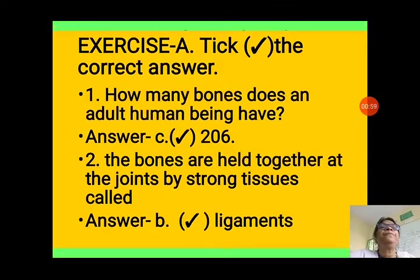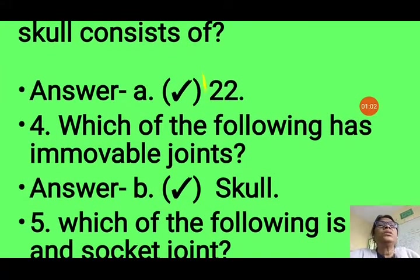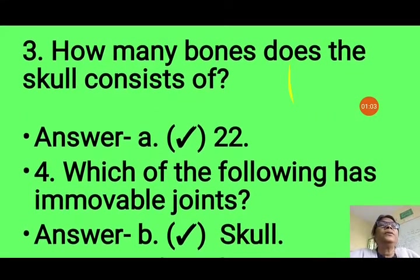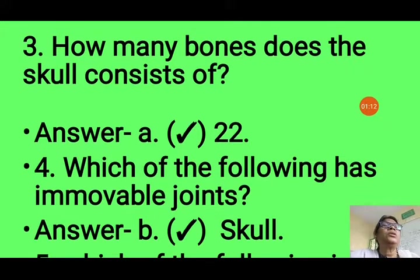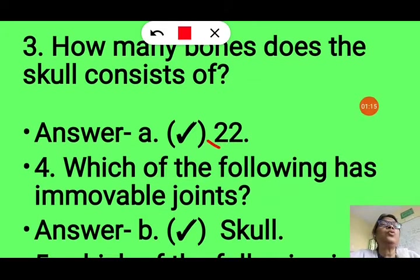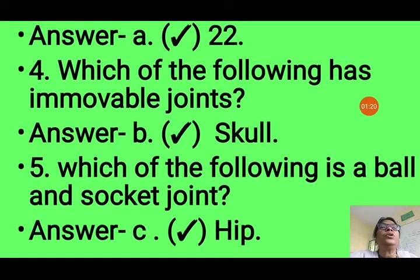Third question: How many bones does the skull consist of? Options are 22, 24, 33, or 56. We know that the skull consists of 22 bones, so we take option A — 22.